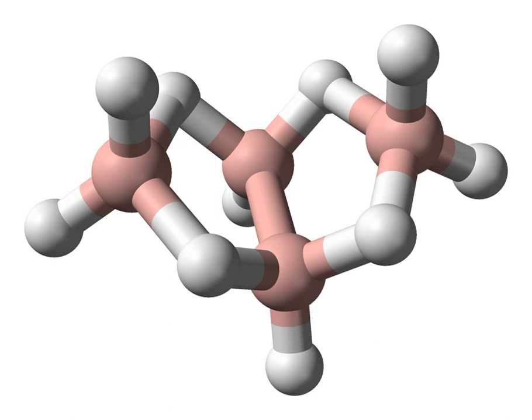Tetraborane can be produced via a reaction between acid and magnesium, aluminum, or beryllium borides. Hydrolysis of magnesium boride, hydrogenation of boron halide at high temperatures, and the pyrolysis of diborane also produce tetraborane.